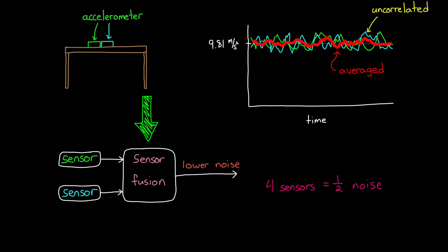So four identical sensors fused together will have half the noise of a single one. In this case, all that makes up this very simple fusion algorithm is an averaging function.